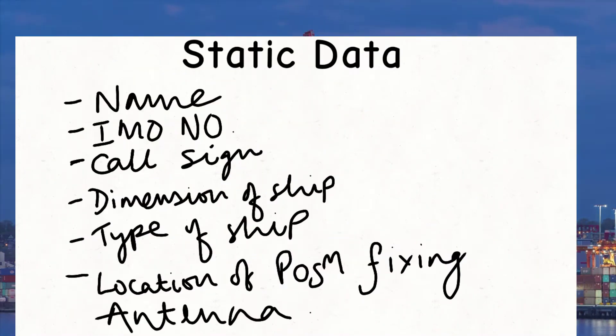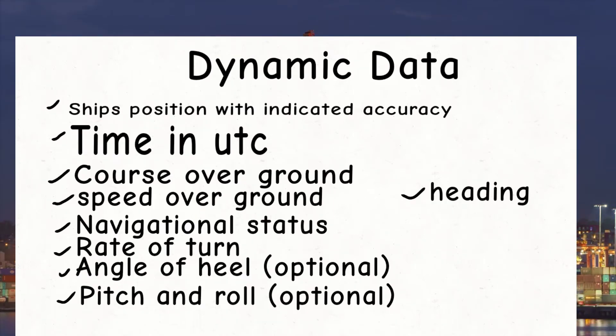The IMO has specified three standard message types: the static message, the dynamic message, and the voyage related message. In this video you can see the various types of data which come under these three categories.